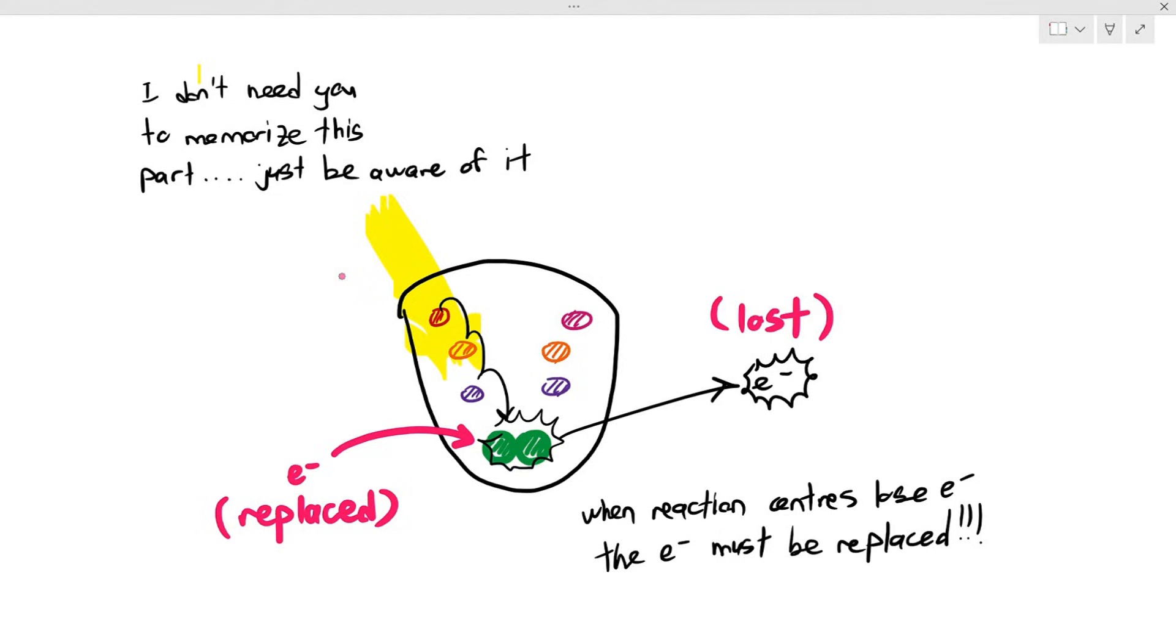To prevent the reaction center from being broken down or oxidized beyond repair, whatever electron that is lost must be replaced, which means if it loses two electrons, two new electrons need to come in and replace it to stabilize its structure. You don't need to memorize this, but I just need you to be aware of this particular feature.